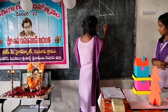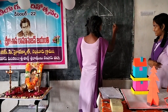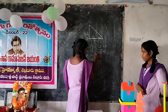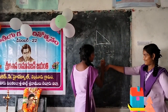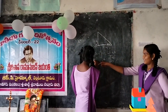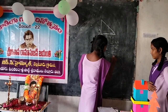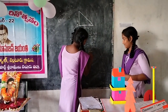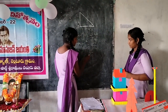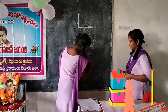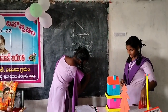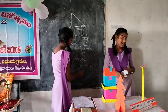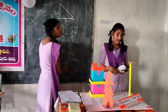So, Tan Theta is equal to 45 degrees. So, Tan Theta is equal to 35 degrees. So, Tan Theta is equal to 35 degrees.